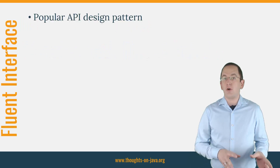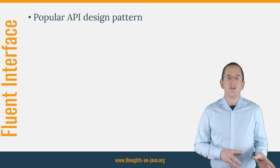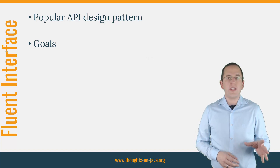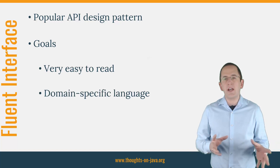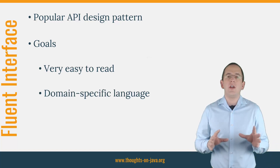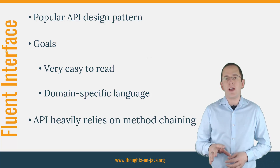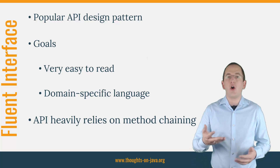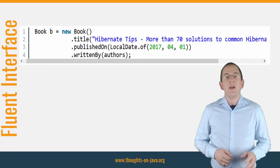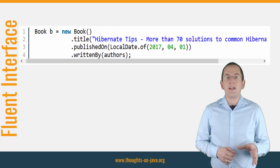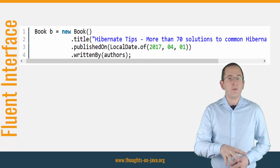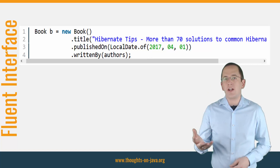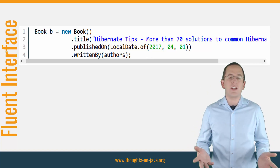Fluent Interfaces are a popular API design pattern in the Java world. The goal of the pattern is to create APIs that are very easy to read and that define something similar to a domain-specific language. To achieve that, the API heavily relies on method chaining so that the code flows and almost reads like prose. A basic example of a Fluent API might look like this — the code looks more like a description of a book object and not like a technical piece of code that calls multiple setter methods.